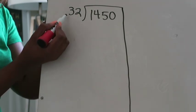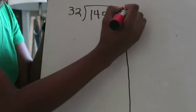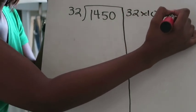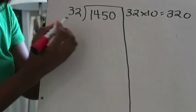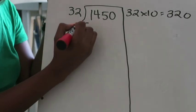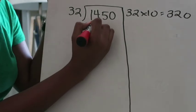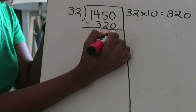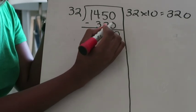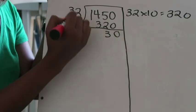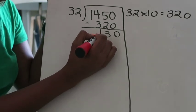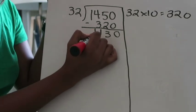I'm going to start with multiplying my divisor 32 by 10. So 32 times 10, I know that's going to be 320. I'm going to subtract 320 from 1450. 0 minus 0 is 0, 5 minus 2 is 3, 4 minus 3 is 1, and 1 minus nothing is 1.